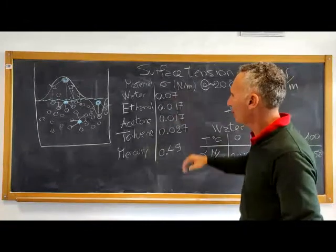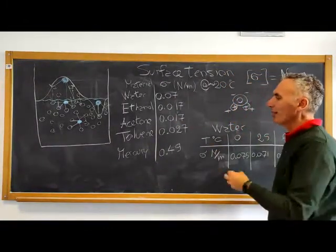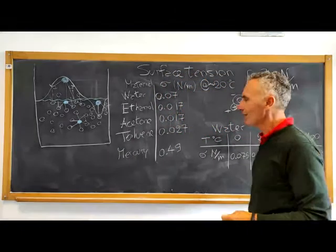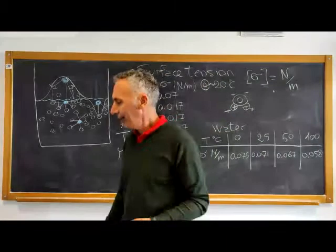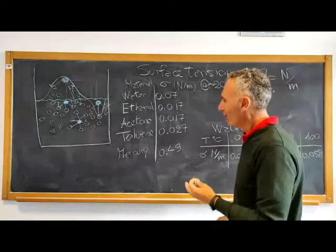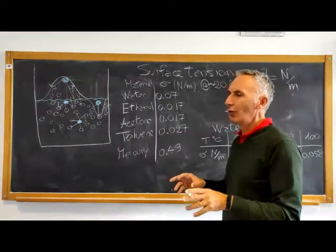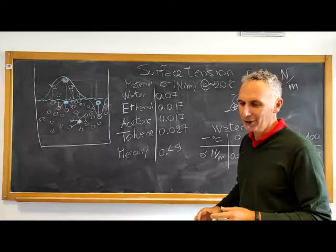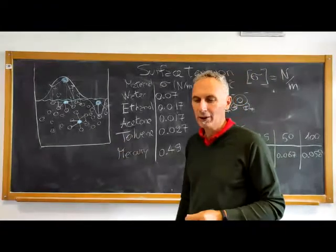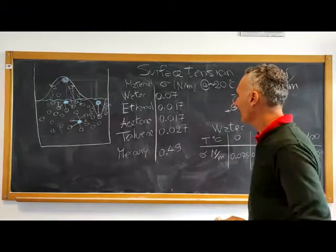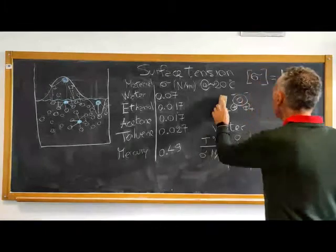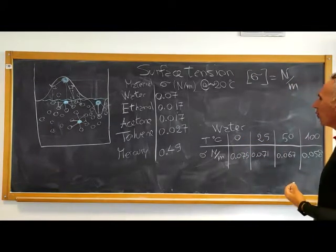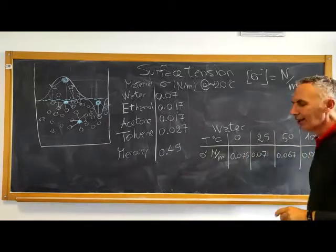Mercury is completely different from the other liquids. Mercury is not polar; it is a liquid metal. All metals share their outermost electrons, so mercury consists of atoms inside a sort of ocean of shared conduction electrons. These electrons act as a glue across all atoms together, which is why mercury has such a high surface tension value compared to the other materials.